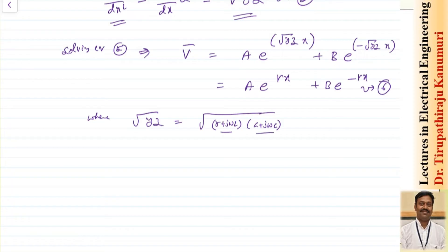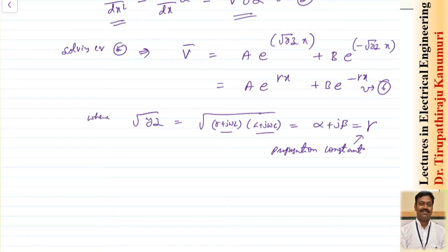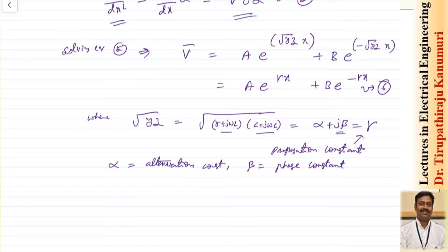This gamma is called the propagation constant, which describes how the wave propagates along the line. It has two components: alpha, called the attenuation constant, and beta, called the phase constant — because beta determines how the phase changes. The units of beta are radians per unit length, indicating how many radians of phase shift occur per unit length.